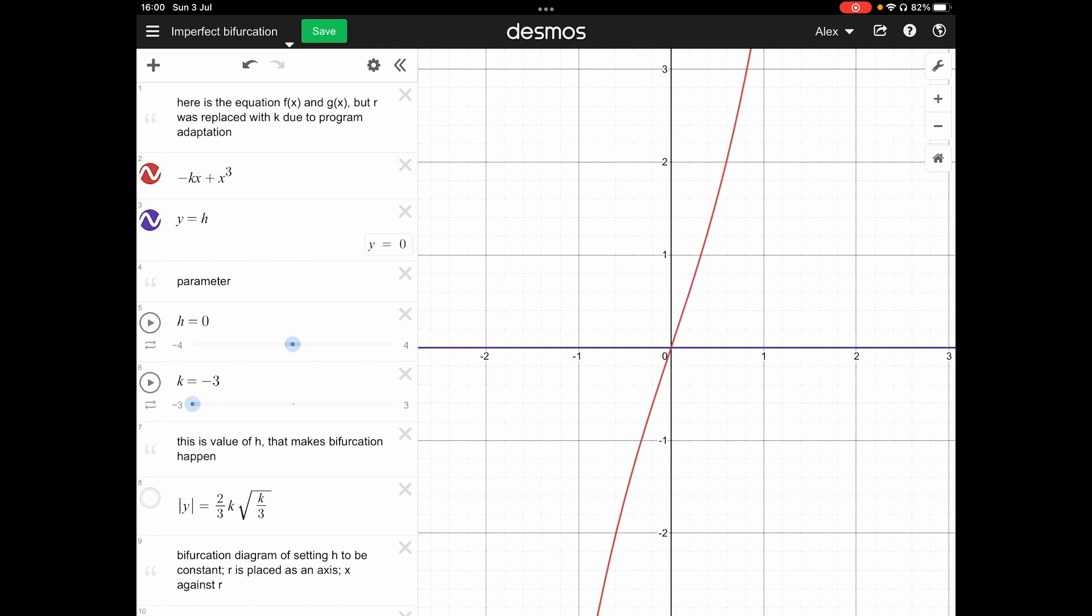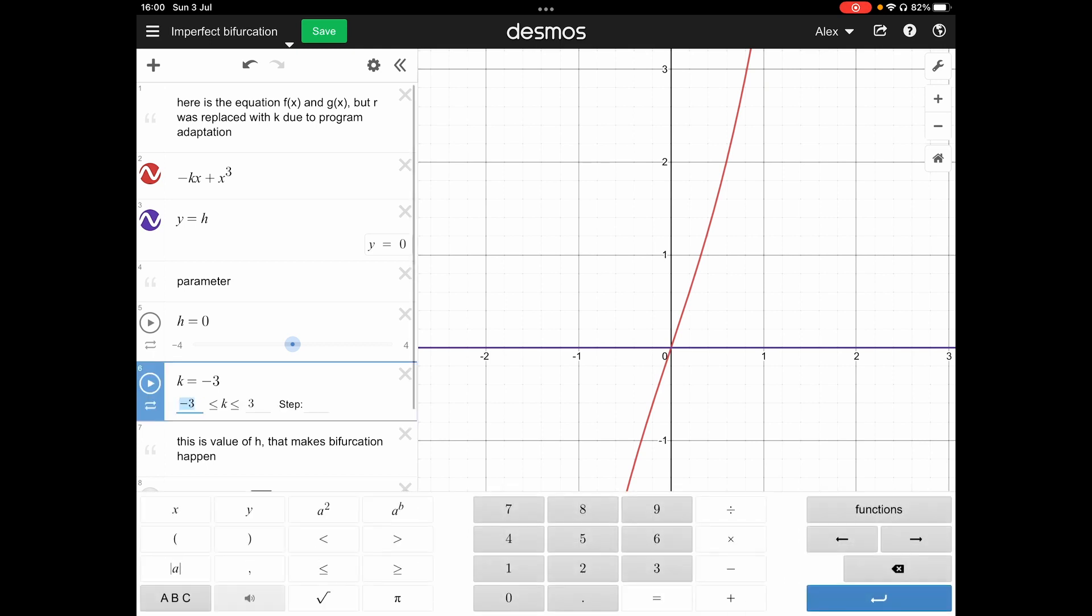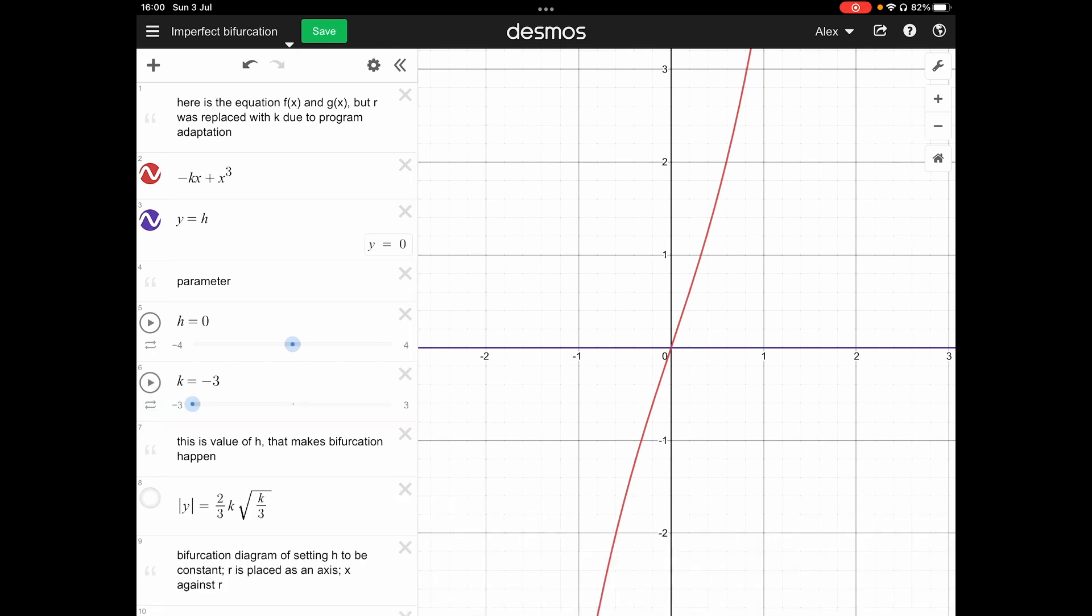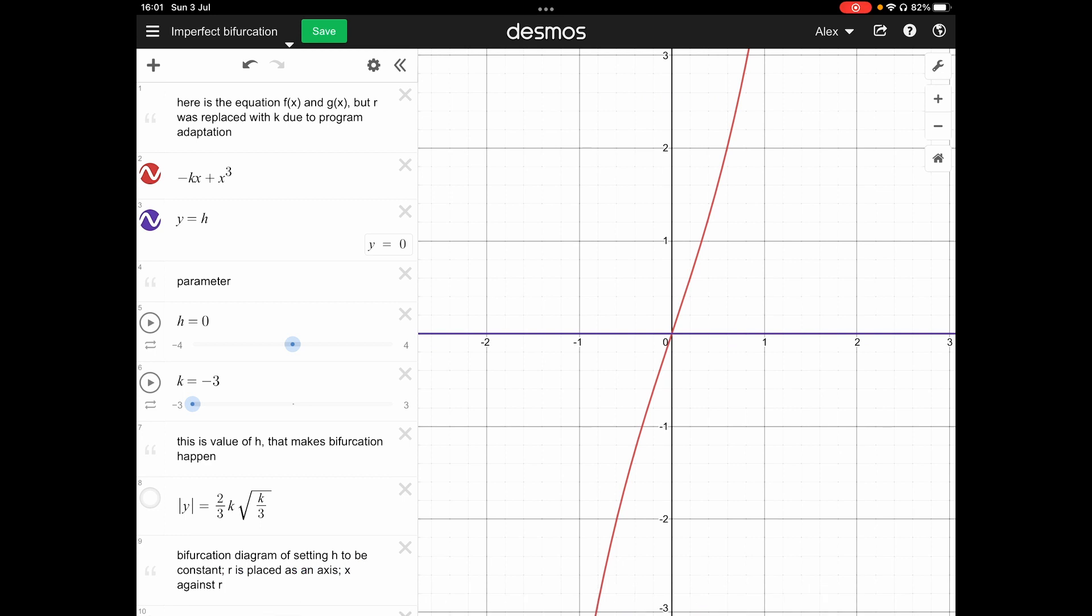Then if you go to negative, then just nothing changes. It's not getting more intersection or something. Then how about the h not equal to zero case? Like for example, h is slightly larger than zero. It turns out to be the asymmetric case, just like the non-symmetric case.